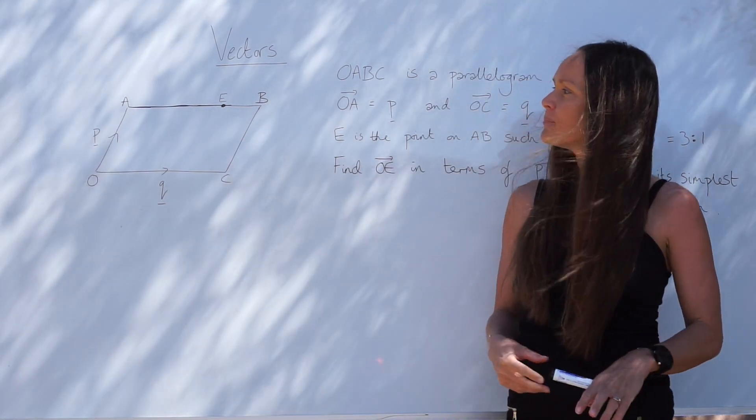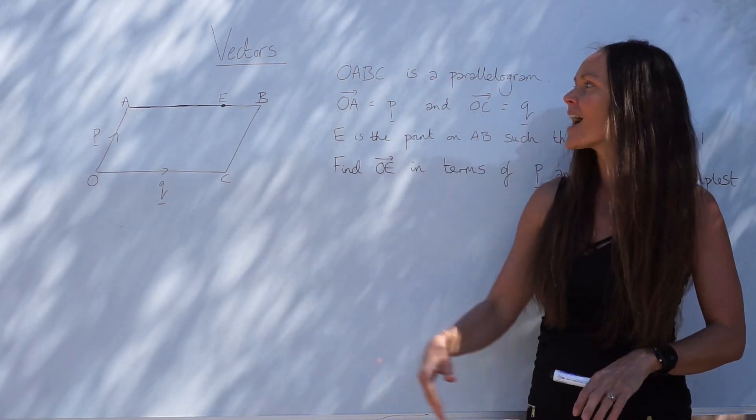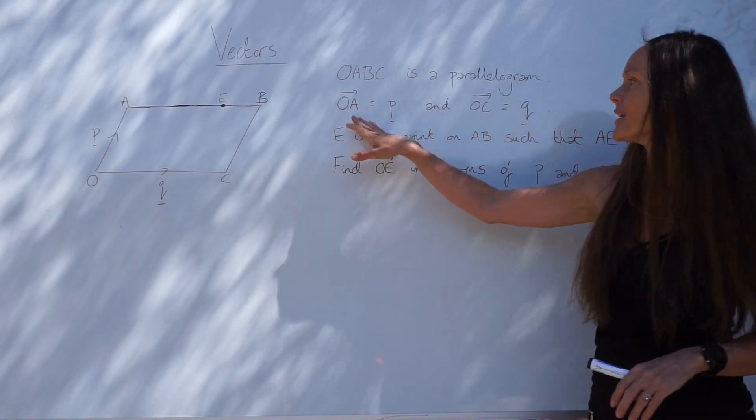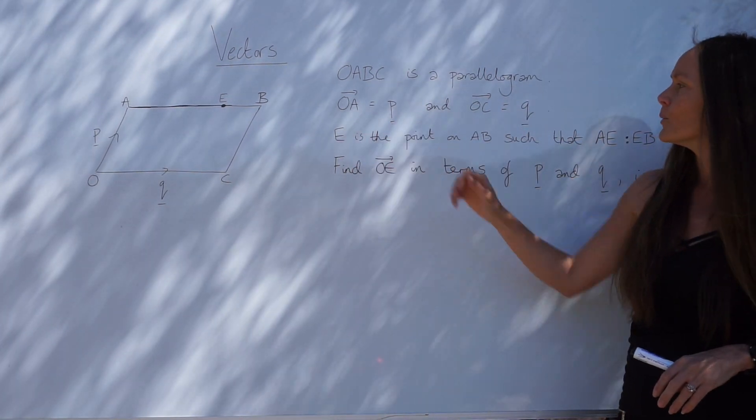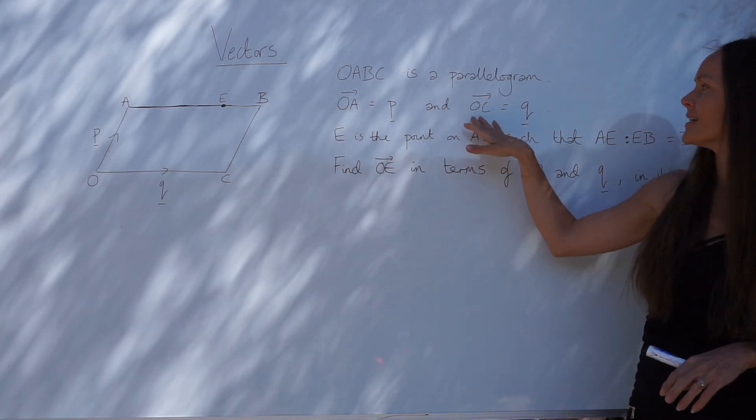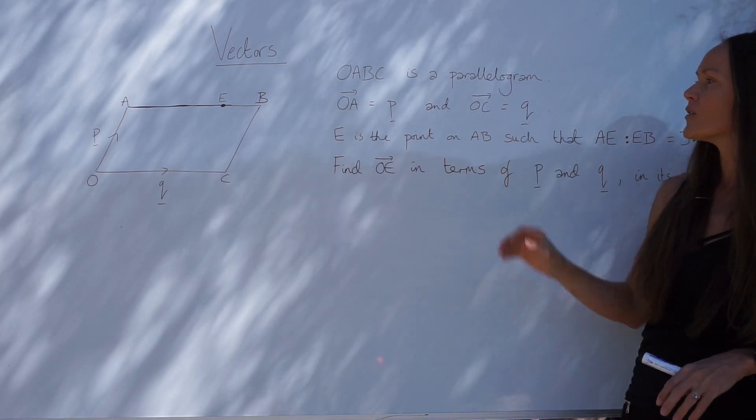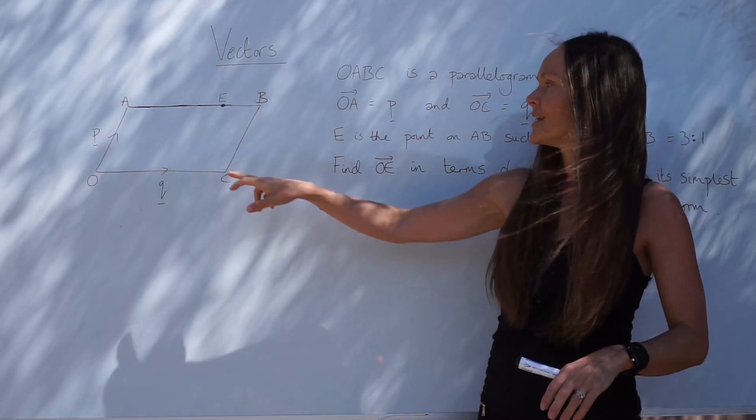So in this question we have O, A, B, C, a parallelogram, and we know that O to A is equal to vector P. We also know that O to C is equal to vector Q, so these are shown on the diagram over here.